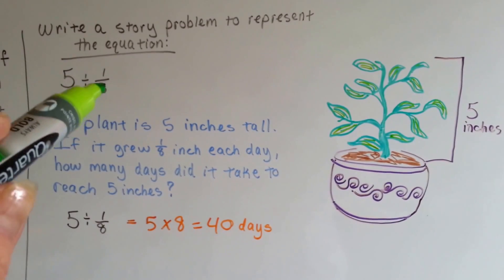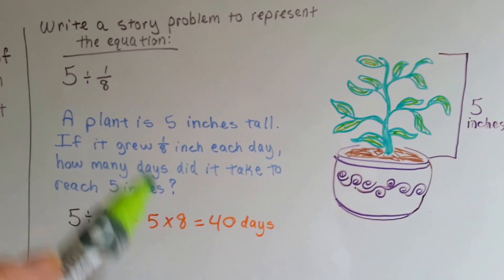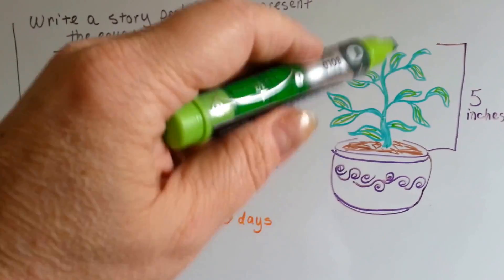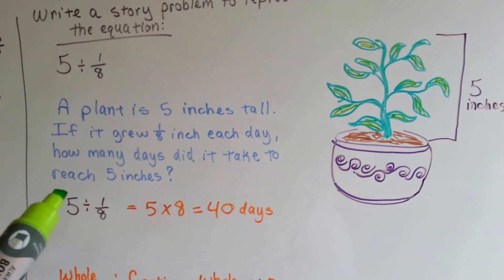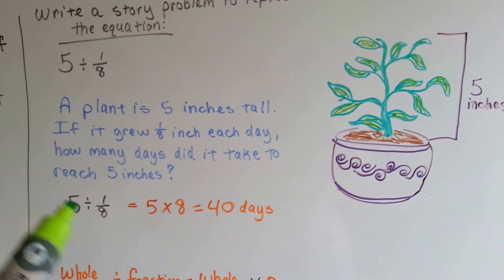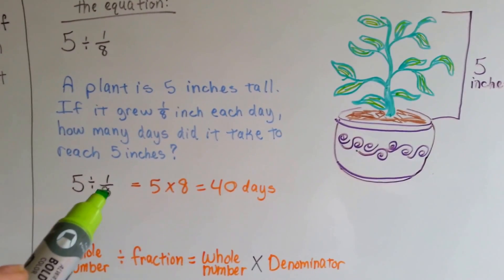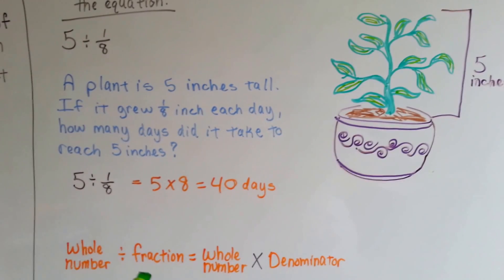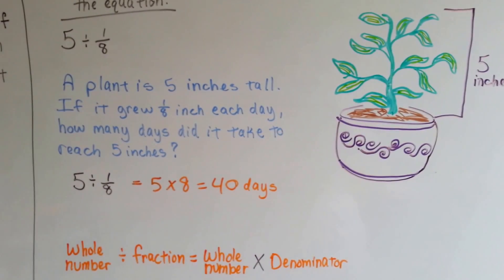So we need to put the one-eighth into the five to see how many we'll get. That'll tell us how many days it took for it to get five inches tall. Five divided by one-eighth is the same thing as five times eight. When the whole number is first divided by a fraction, it's the same thing as the whole number times the denominator. It took forty days.